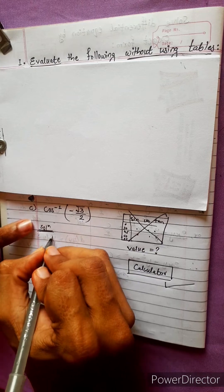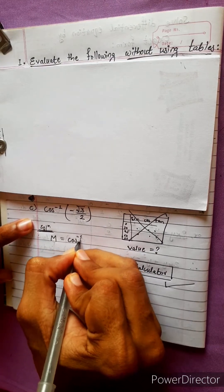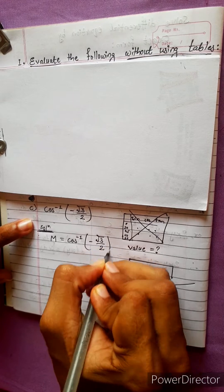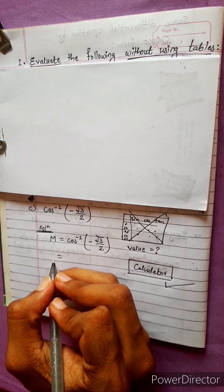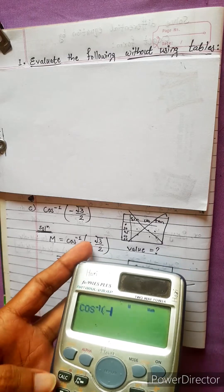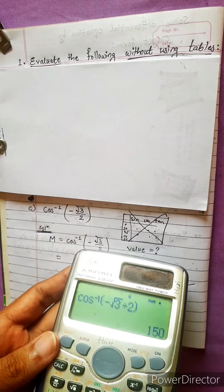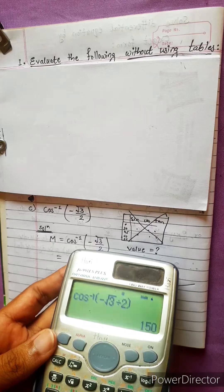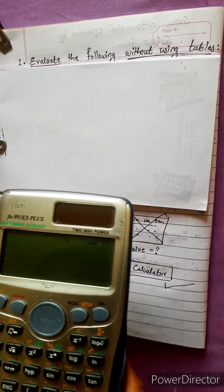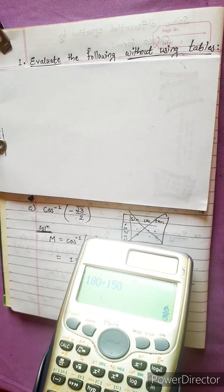Let's define by some variable. Let m equal cos inverse of negative root 3 over 2. That is, m equals cos inverse of negative √3/2. This will be 150 degrees. So let's write 150. Now, 180 divided by 150 gives us 6 by 5.